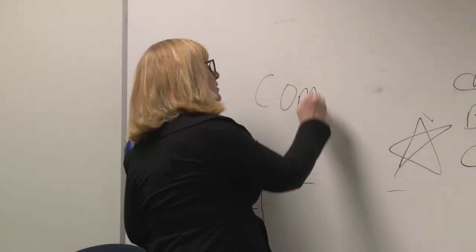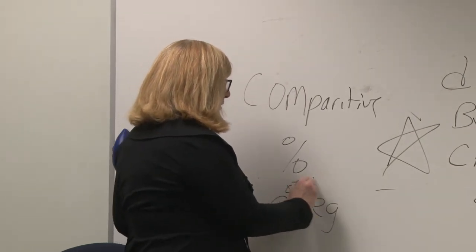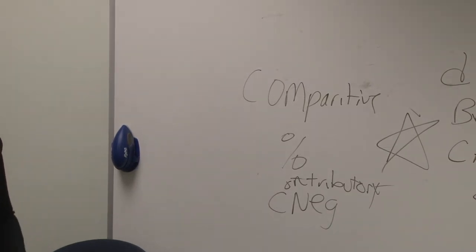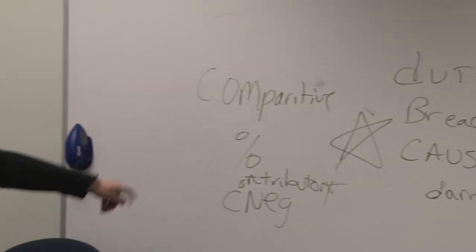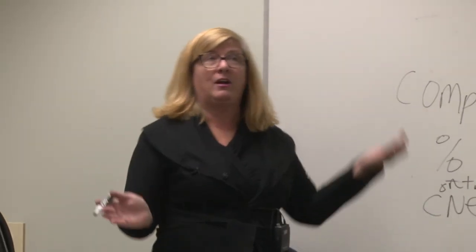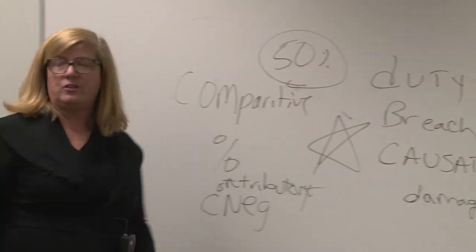Illinois is a comparative negligence jurisdiction — we assign the percentage of fault to each party. Other states, like California, use contributory negligence: if the plaintiff contributed at all — for example, by choosing the wrong life preserver for their weight — they're completely barred from recovery. In Illinois, both lawyers argue whose fault was 80% versus 20%. If you're over 50% liable, there's a significant reduction in damages. The key question is whether the plaintiff can prove all four elements, and whether comparative or contributory negligence defenses reduce damages.